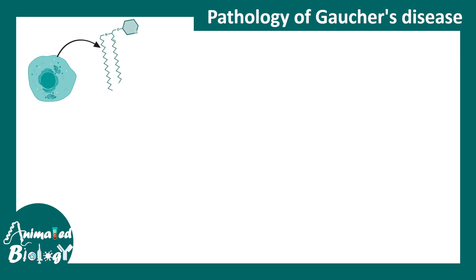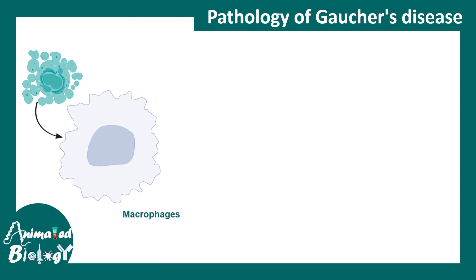Generally, every cell type has glucocerebroside as a glycolipid incorporated in their membrane. When cells get old and die, macrophages — the immune cells — take up this debris and clear it by phagocytosis.